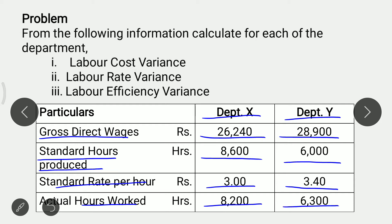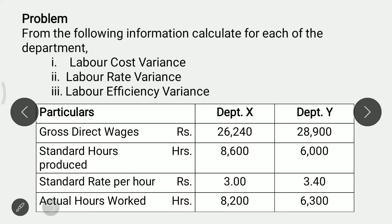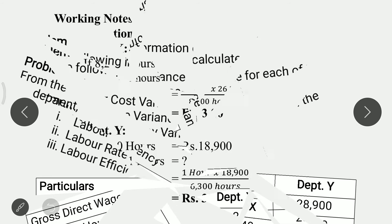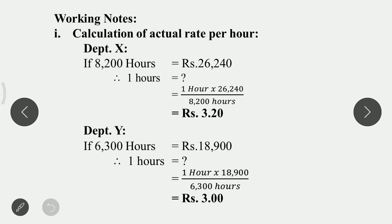In this problem, Gross Direct Wages means actual total wages are given. We have to calculate the actual wages per hour. So we will see the first working note: calculation of actual rate per hour.